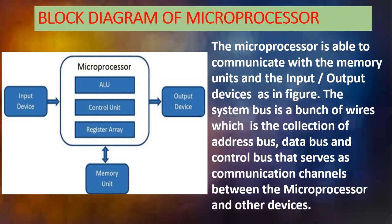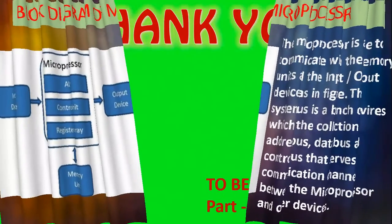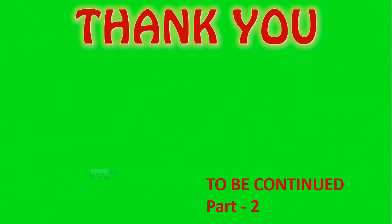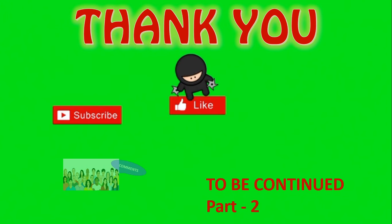The system bus is a collection of address bus, data bus, and control bus. It carries the address of a particular memory location, signals from the control unit, as well as data. It serves as a communication channel between the microprocessor and other devices. Through the bus only, the microprocessor can communicate with other units — input unit, output unit, and memory unit. All parts of the computer communicate with each other and transfer data through the bus. I hope you have understood the concept of computer organization, architecture, and microprocessor. In the next video, we will discuss the characteristics of the microprocessor. Thank you.